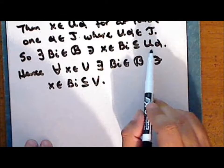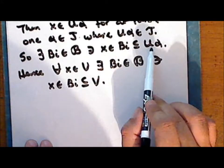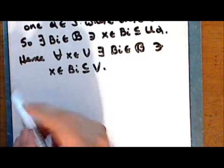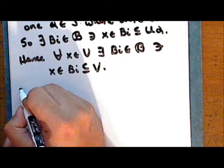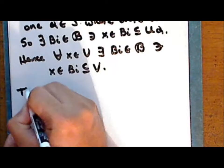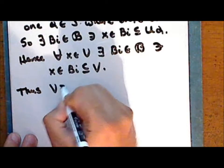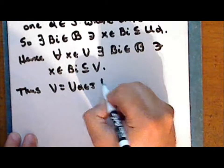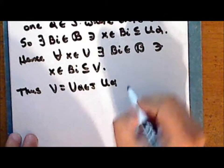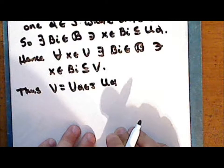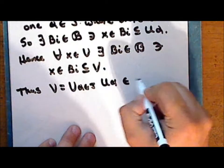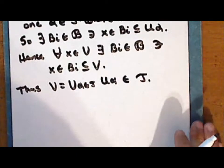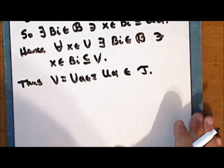Since V is the union of all such sets U_α, the set V — which is the arbitrary union of a collection of sets in τ — is also in τ. So the second condition in the definition of a topology is satisfied.